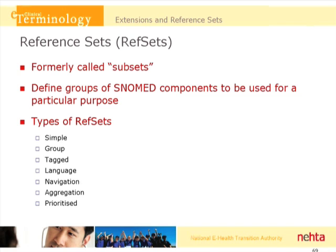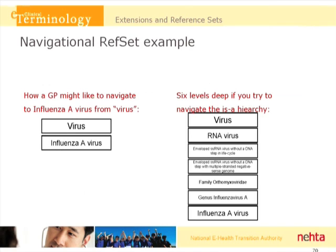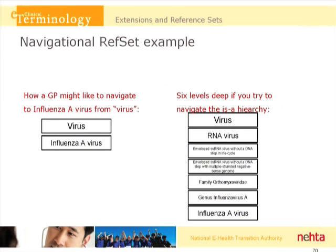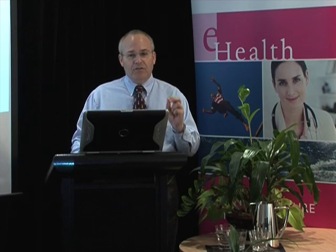Here's a navigation reference set example. A GP might want to navigate directly from virus down to influenza A virus. If you look at the ISA hierarchy in the organisms section, you have to start at virus and know that influenza A is an RNA virus, that it's an enveloped single-stranded RNA virus without a DNA step in the life cycle — and does anybody remember that influenza A is in the family Orthomyxoviridae? It would be very difficult to navigate all those levels to find influenza A virus as a GP. Using a navigational reference set, we can take the common viruses — influenza, measles, mumps, rubella, hepatitis viruses — and put them right at the top level. That's an example of how reference sets make navigation easier.